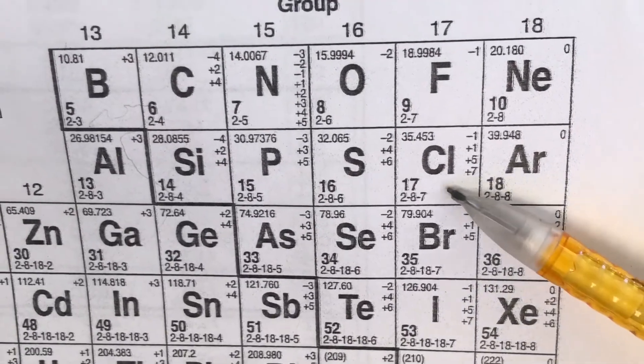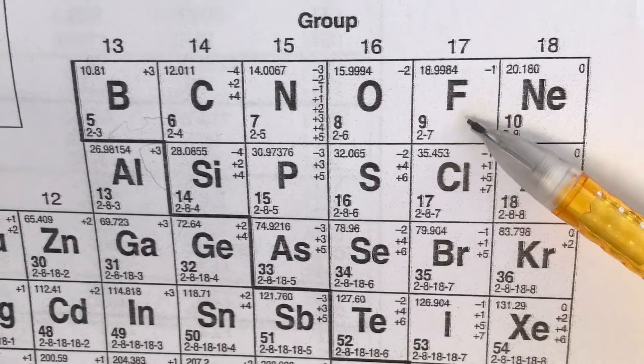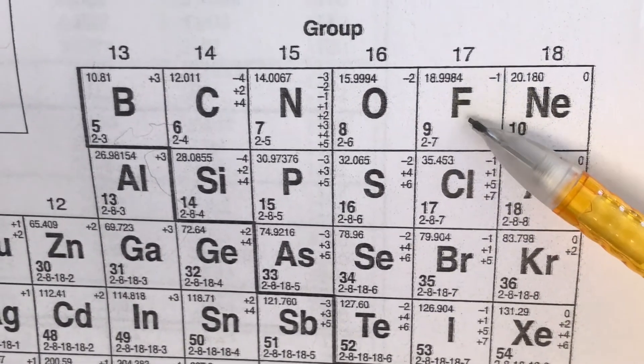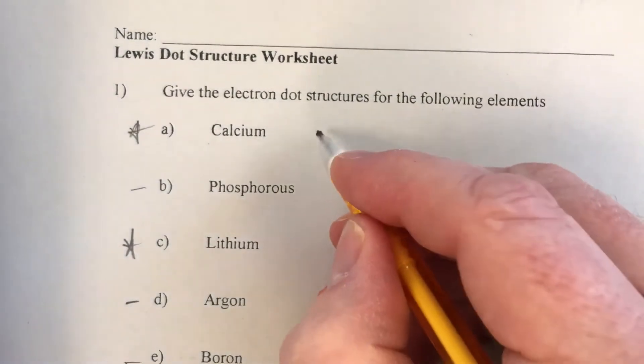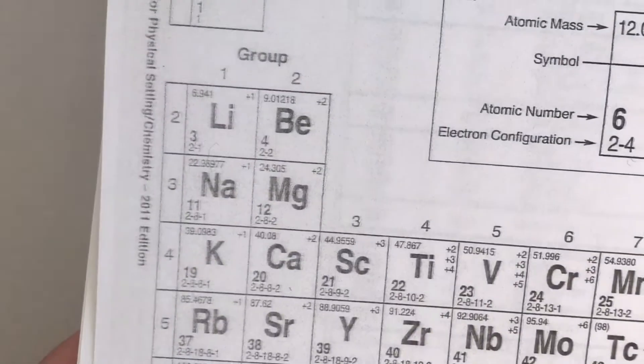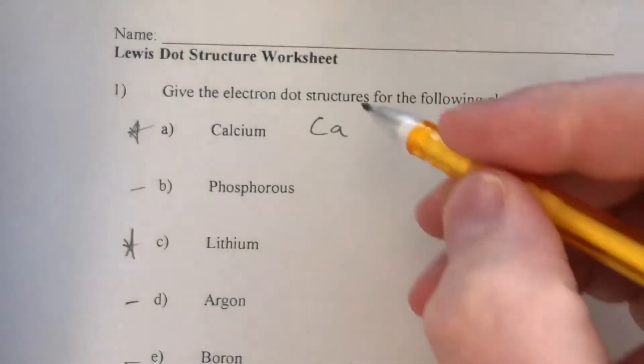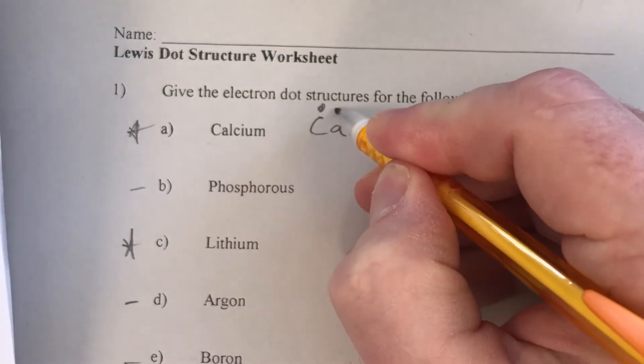Those numbers are the numbers we're going to pull from. We're only worried about the last or the outer number, and of course we're focused on the symbol itself. For example, calcium we know has a symbol of Ca, and when we look up calcium it's over here in group two. It has two valence electrons.